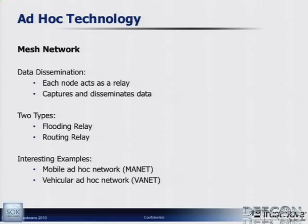There are two types: flooding and routing. Flooding basically hits every single node, while the routing one has predetermined directions of where it's going to go. Some interesting examples of ad hoc mesh networks include mobile ad hoc networks and vehicular ad hoc networks. Nothing has really been pushed out as a standard — it's more in the learning and demonstration stages — but it's clever and could actually be applied into emergency situations like this.